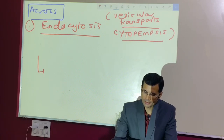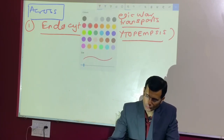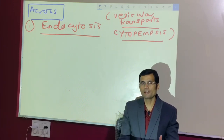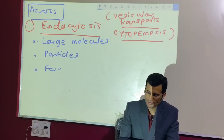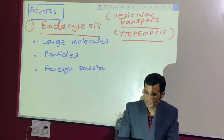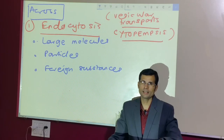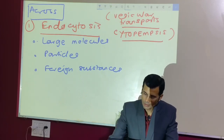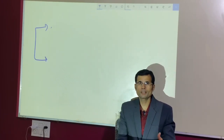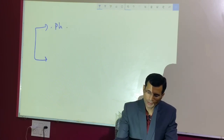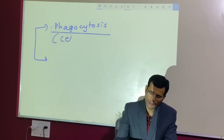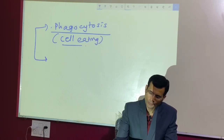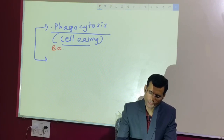Which substances are internalized by endocytosis? Those which cannot pass through the membrane by diffusion — for instance, large molecules, macromolecules, particulate matter, foreign substances, and bacteria. These substances enter the cells by endocytosis. There are two types based on whether the substance is solid or liquid. When solids enter the cell, it is called phagocytosis, also known as cell eating. Example: bacteria entry into neutrophils.